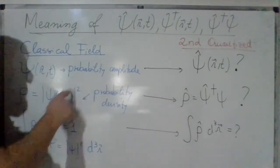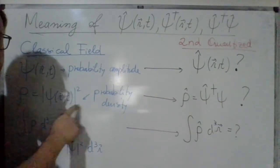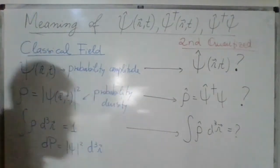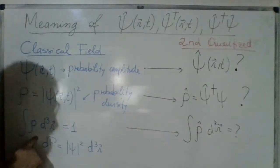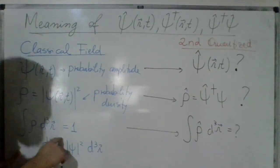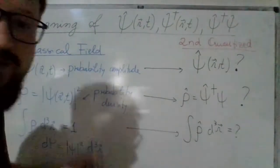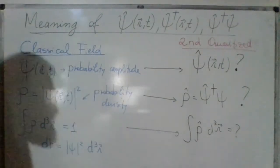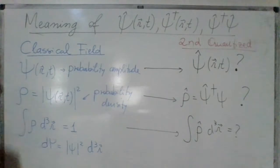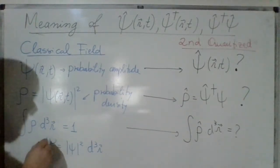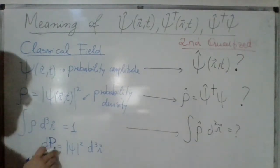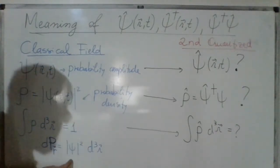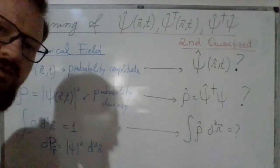Just to remember: for a classical field describing the electron in quantum mechanics, there is a probability amplitude, which is the wave function. When you take the squared modulus of that amplitude, it gives a probability density distribution. If you integrate over all of space in three dimensions, it produces one, because the probability of finding one electron everywhere in space must equal one. So the probability of finding the electron near position r is the probability density times the infinitesimal volume around that point.